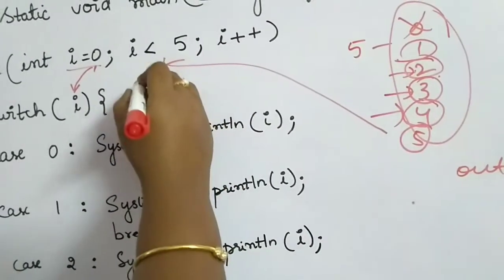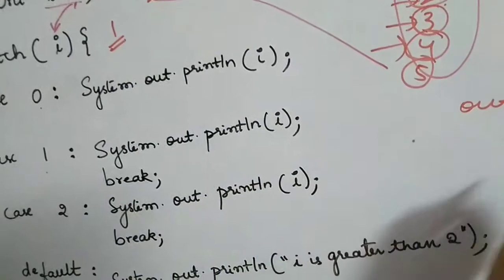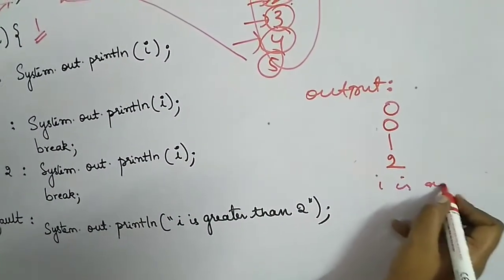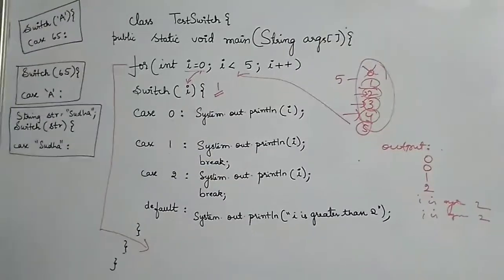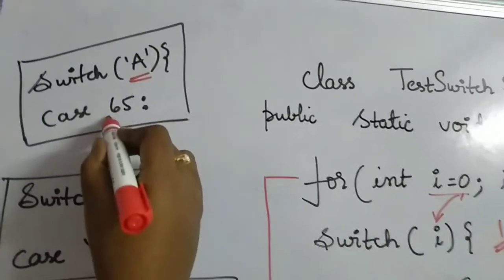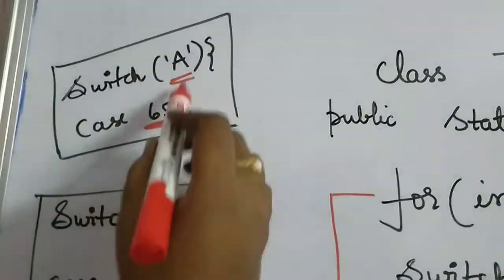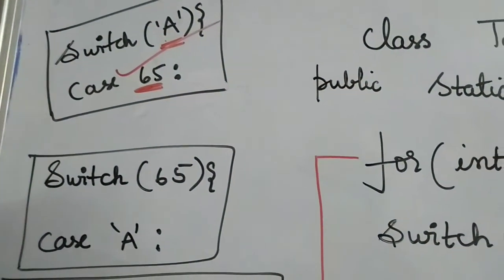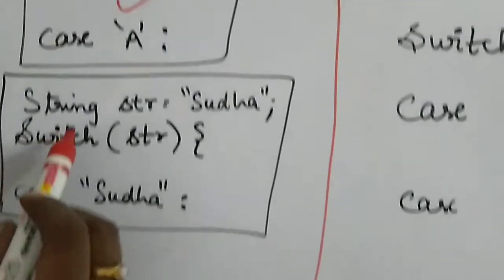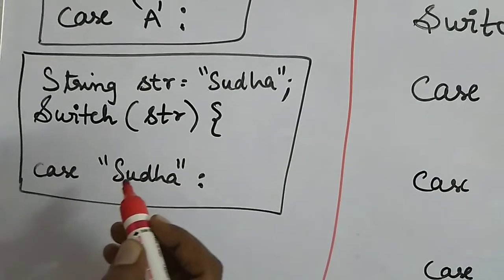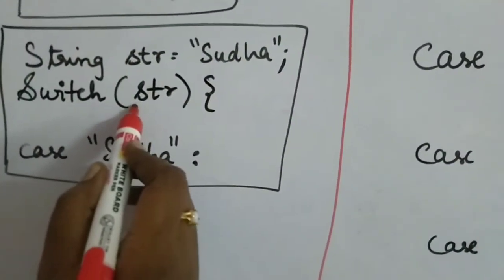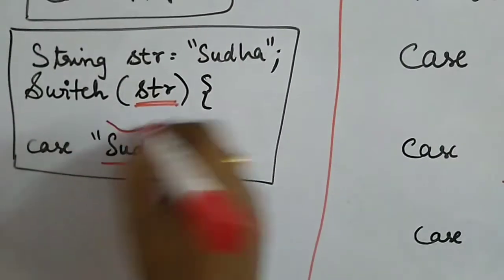After that, for i equals one, it prints one; for i equals two, it prints 'i is greater than 2'. You can also pass characters as expressions — for example, 'A' which has Unicode value 65 is compatible with integers. From Java SE 7, you can also use strings, for instance comparing a string variable with a case value like 'suda'.